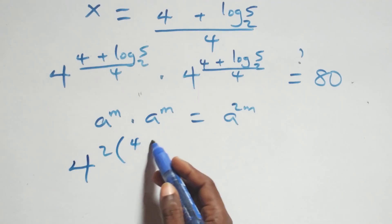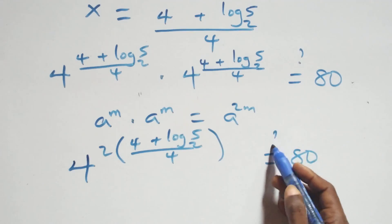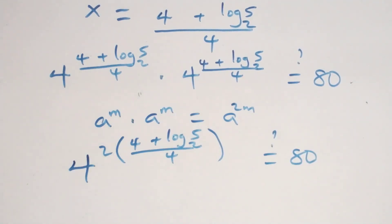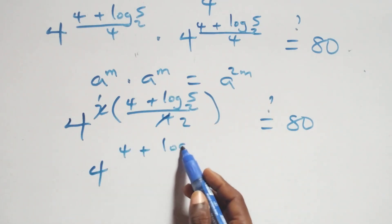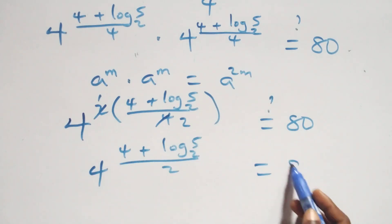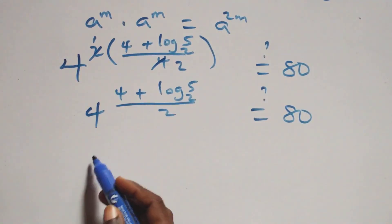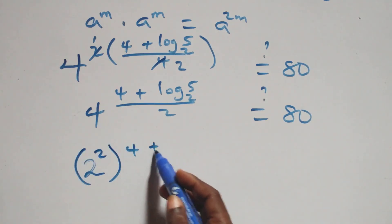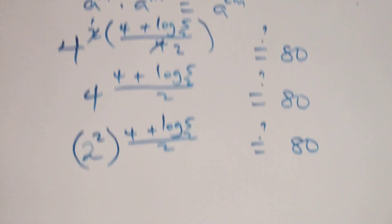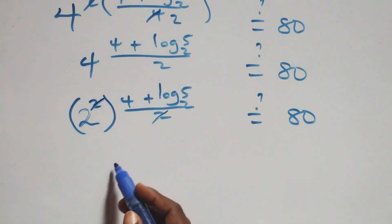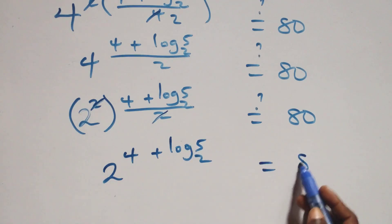That is, we have 4 raised to power 2 times (4 plus log₂5)/4, which equals 80. This power simplifies as the 2 and the 4 reduce: we have 4 raised to power (4 plus log₂5)/2, which equals 80. Then we can write 4 as 2 squared, so we have 2 squared raised to power (4 plus log₂5)/2 equals 80. These powers multiply and the 2 in denominator cancels, giving 2 raised to power (4 plus log₂5) equals 80.